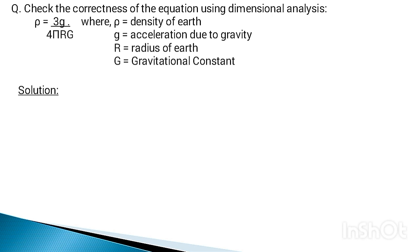We can check whether a physical relation is dimensionally correct or not using dimensional analysis. Any relation is dimensionally correct if it follows the principle of homogeneity — that is, the dimensions of quantities on the left-hand side of the equation must equal the dimensions of quantities on the right-hand side. So we need to find the dimensions of each term in the equation.